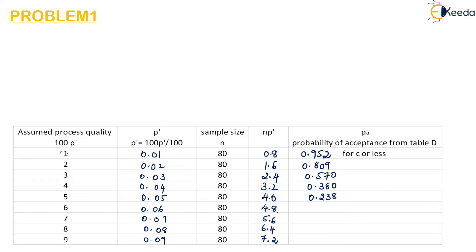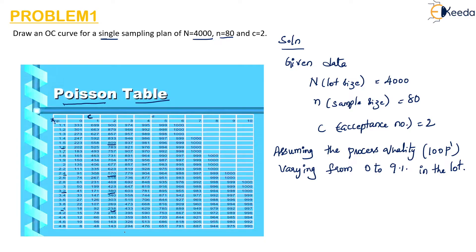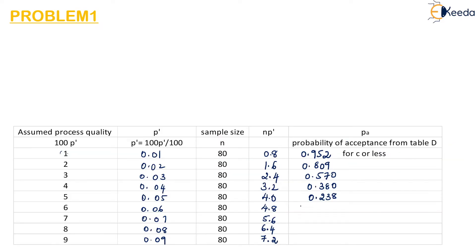For np' equal to 4.8 and c value equal to 2, we get 0.142.